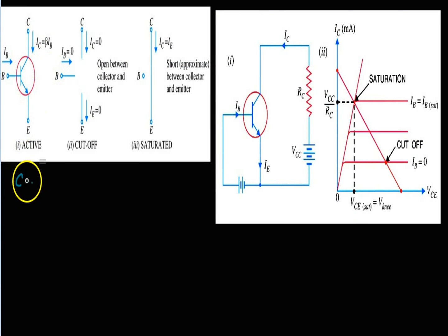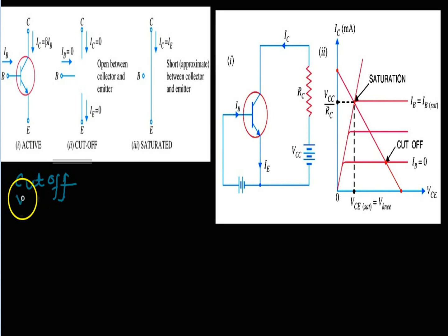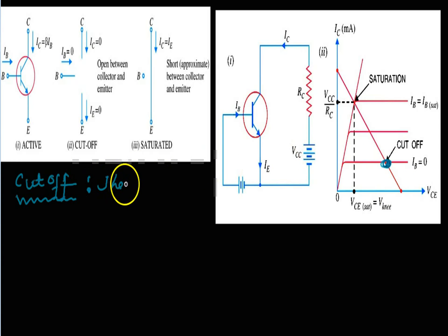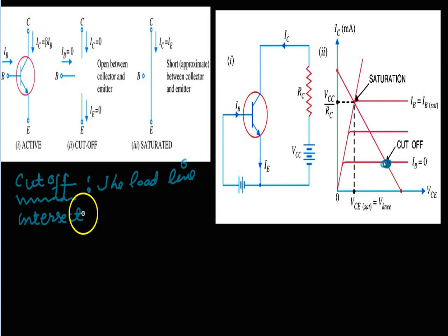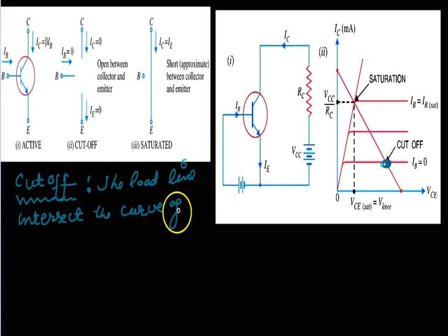Now there are three regions in the output characteristics: cutoff, saturation, and active. We will explain them one by one. First, the cutoff region or cutoff point: look at the load line — it cuts the base current curve when IB equals zero.